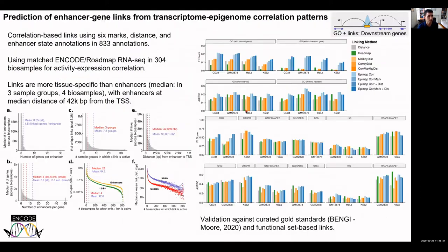Ben James worked with Carlos to systematically predict enhancer-gene links across a large number of tissues. In a subset, they validated these predictions using gold-standard comparisons. The EpiMap predictions are performing very well in most benchmarks compared to other methods.